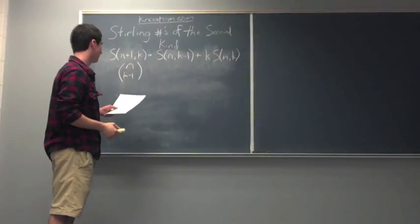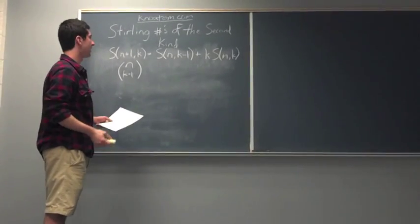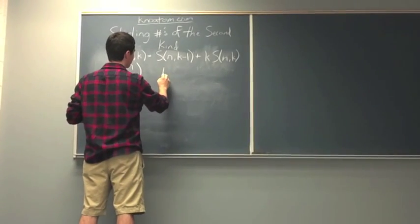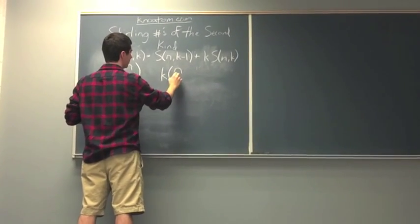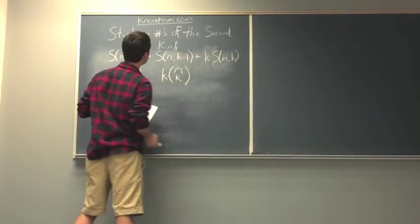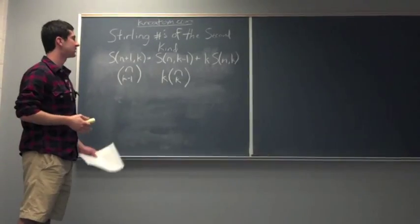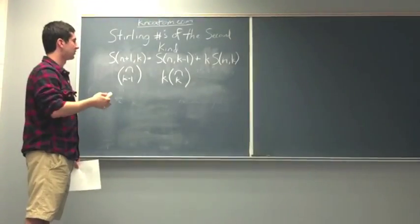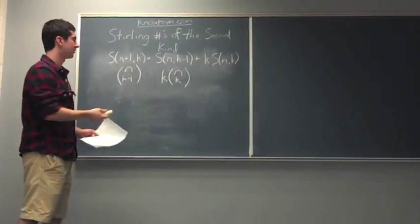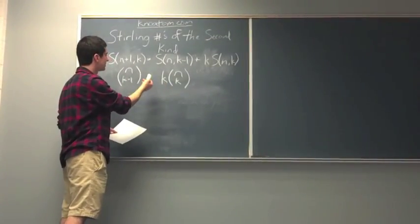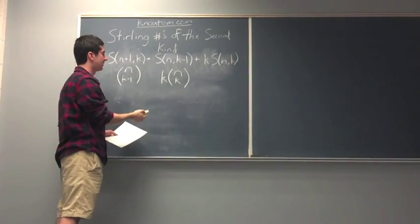And the number of ways that it will not go into k subsets is going to be k times N over k. This is true because if it's not in there, then the rest of the elements, which is going to be N plus 1 minus 1, N elements, will go into k subsets, since the N plus 1 element is not contained in there.